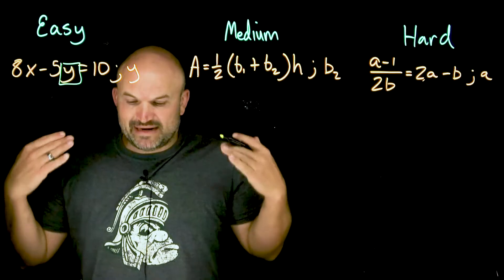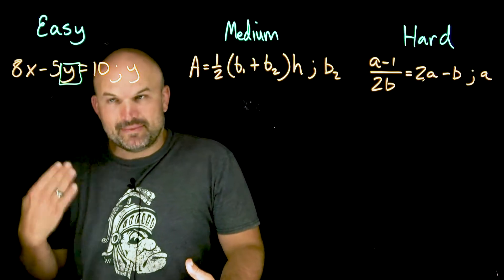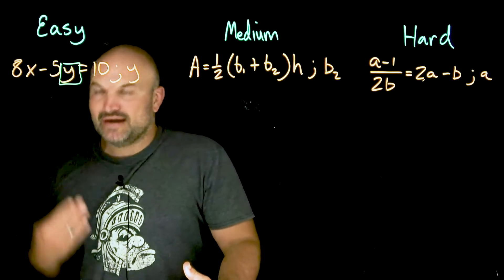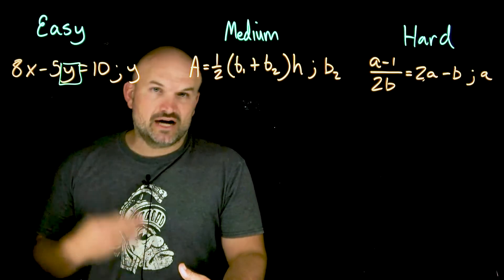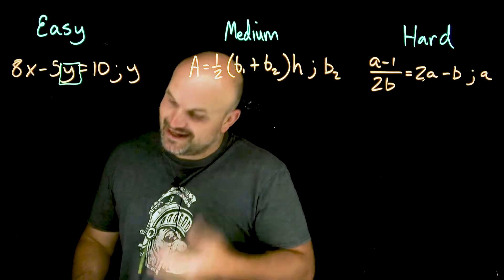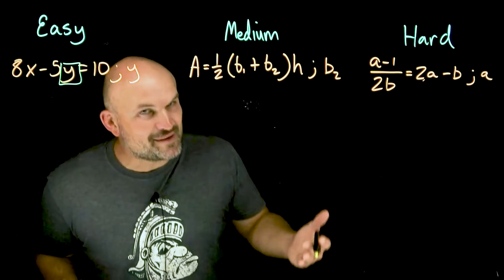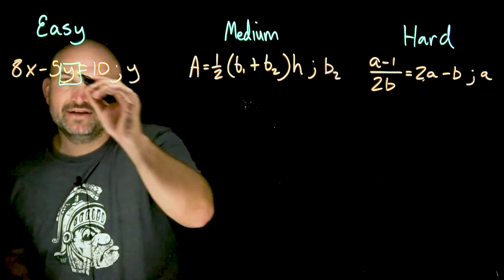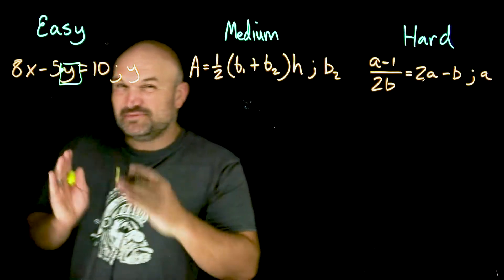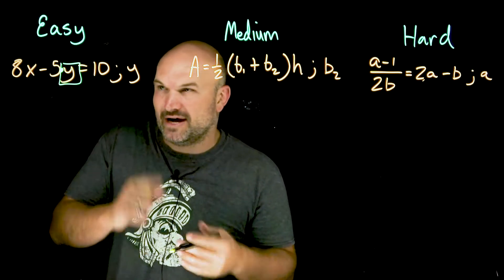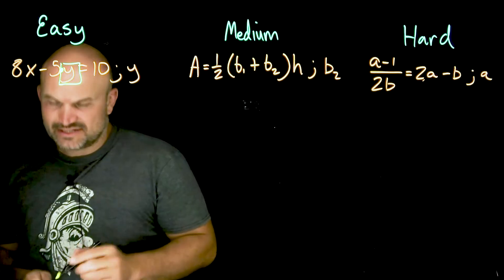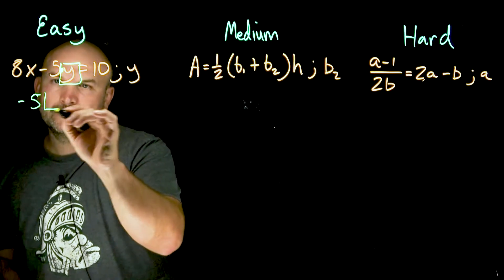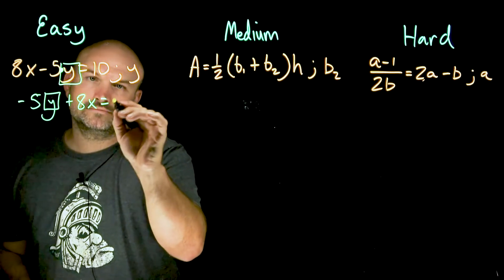So, we need to understand what is being applied to our variable, and we just need to undo them by using the reverse order of operations, and the properties of equality. So, using inverse operations, reverse order of operations, and properties of equality. So, let's go and count down what we have. We have a five times y, and we have an eight x that's actually being added to the negative five y. Some students kind of get confused on this, so let me show you what this would look like.